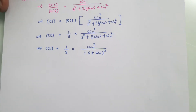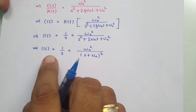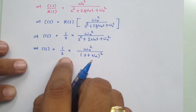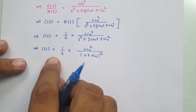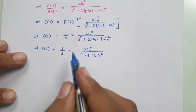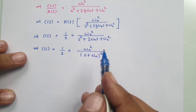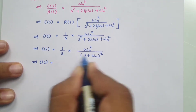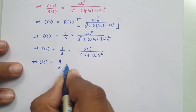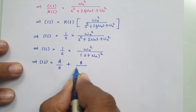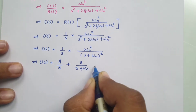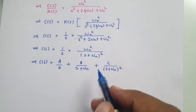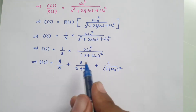We need to apply the inverse Laplace transform to get the output in the time domain, but we cannot do so directly. We will apply the partial fraction method to separate the terms. For the partial fraction, we write the expression as A over S plus B over (S plus omega_n) plus C over (S plus omega_n) squared.